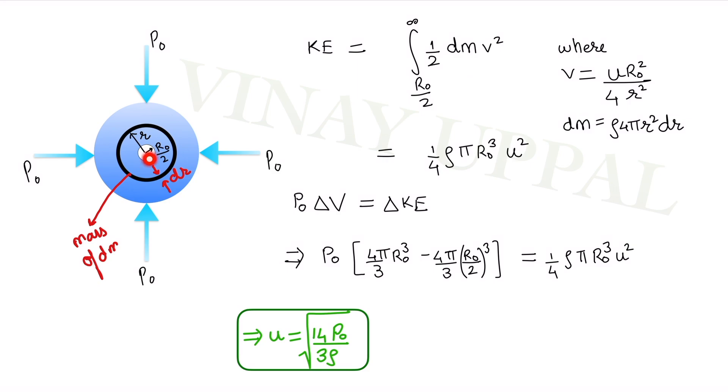I am going to integrate from R0 by 2 till infinity. Like I said, we are going to consider the outer radius of the water body as infinite because the question said that the water body was very large compared to the bubble. The surprising thing is that even though we are integrating till infinity, we will still get a finite kinetic energy because of the 1 by R² dependence of the speed. This is the kinetic energy at the instant that the radius of the bubble is R0 by 2.